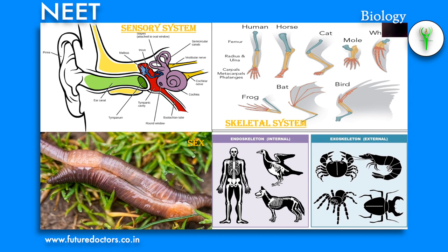Endoskeleton is the hard supporting framework present in the interior of the body. In invertebrates such as sponges, it is made up of calcareous or siliceous spicules. In vertebrates, it is composed of hard living tissues called cartilages and bones. Endoskeleton supports the whole body of an organism.